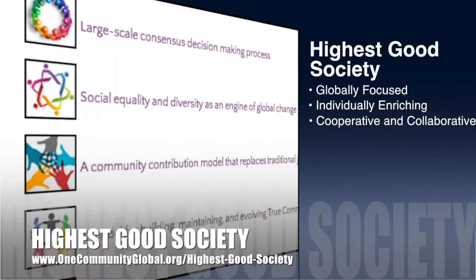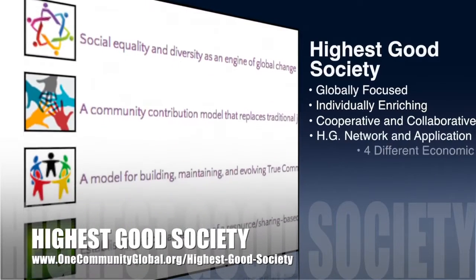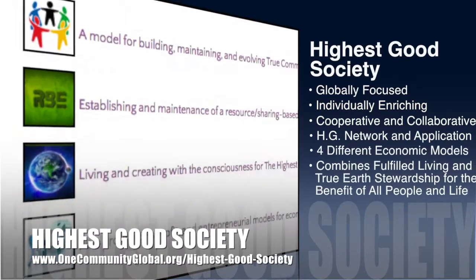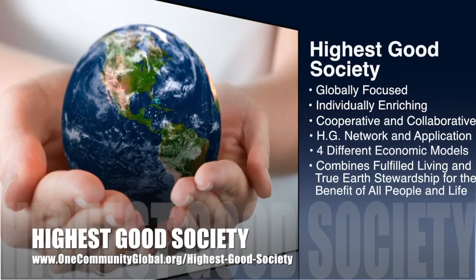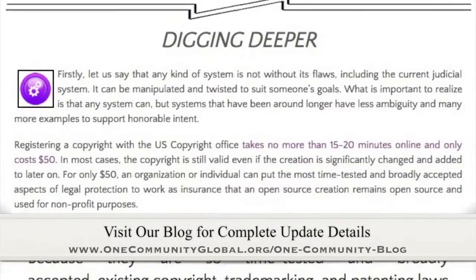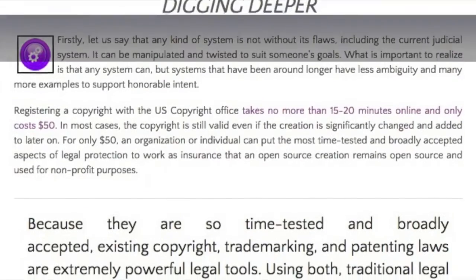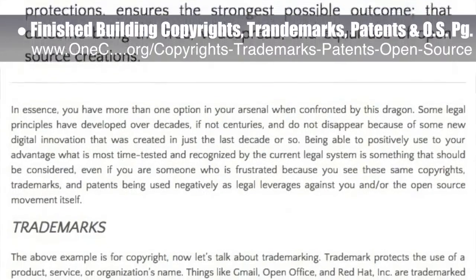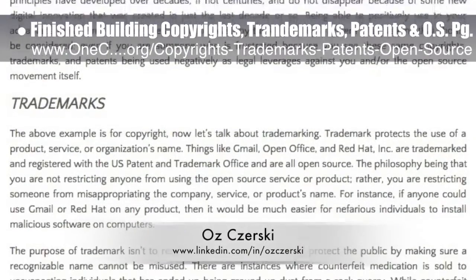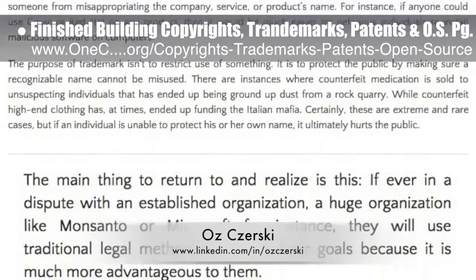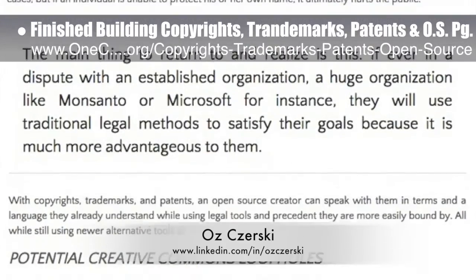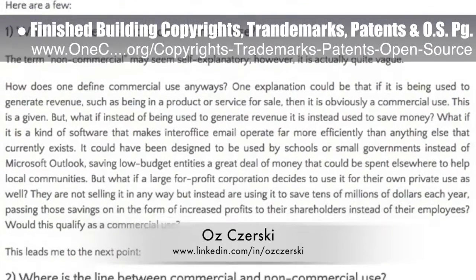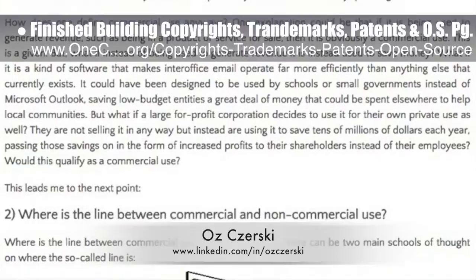The One Community approach to highest good society is globally focused, individually enriching, cooperative and collaborative, includes a highest good network and application, four different economic models, and combines fulfilled living and true earth stewardship for the benefit of all people and all life on this planet. This last week the core team finished building the copyrights, trademarks, patents, and using them to support open source and free sharing page, featuring the work of Oz Chersky, a lawyer specializing in trademark and copyright law. The week of progress included final edits and formatting to bring this page to 100% complete. We also placed ads to find a volunteer patent attorney or patent agent to help create the open source and patenting tutorial page.